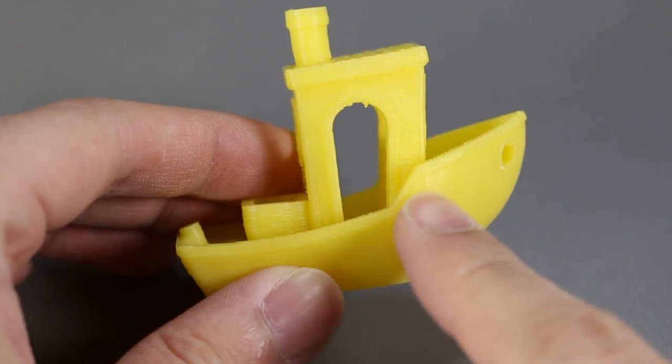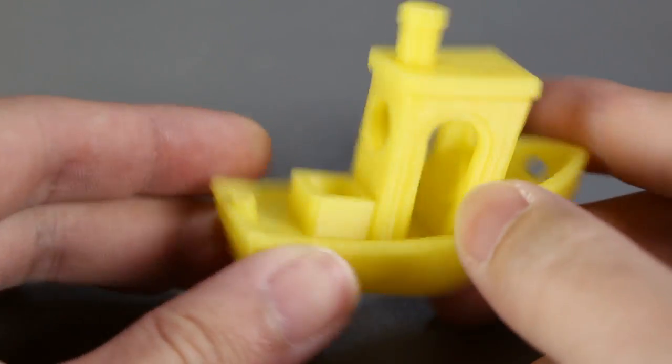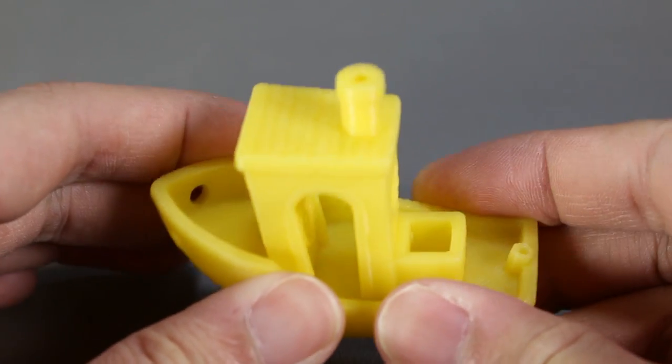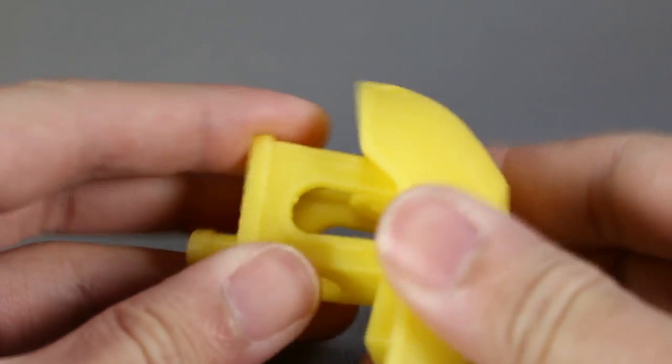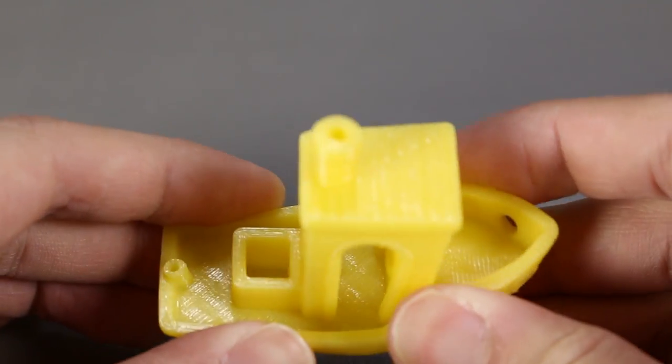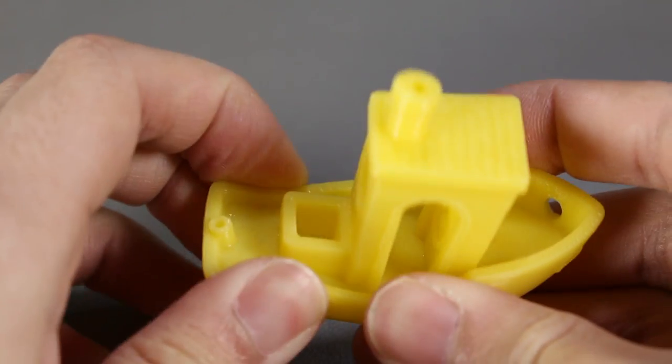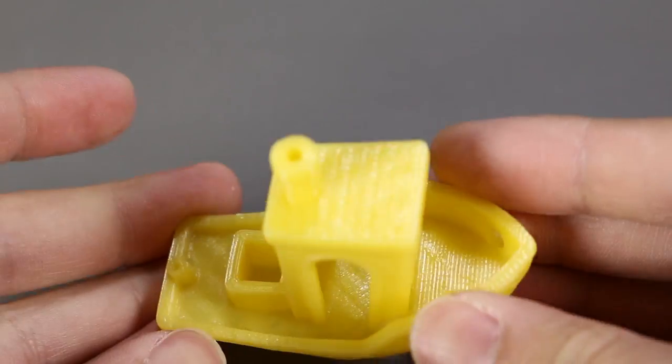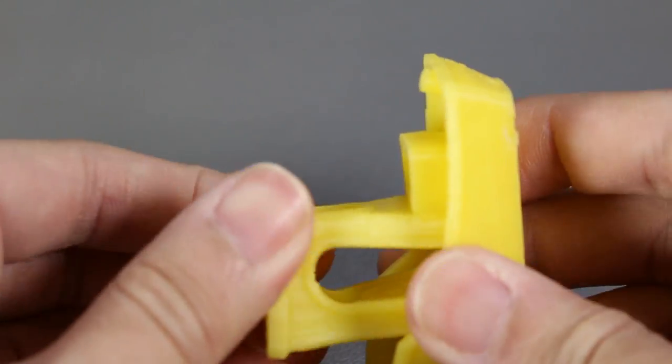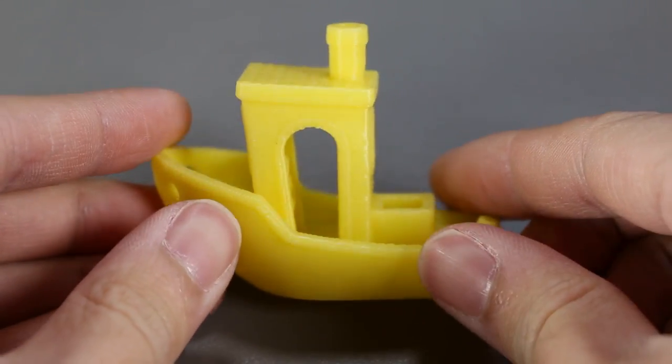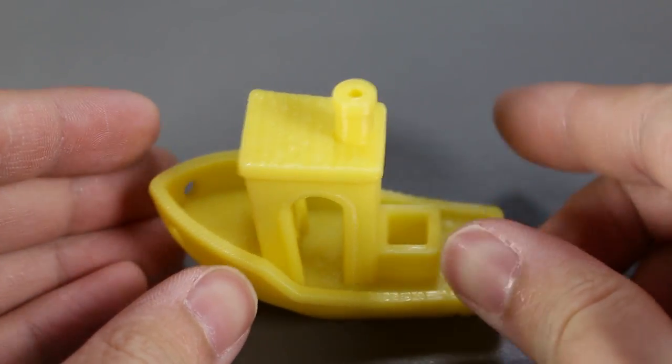It looks like the acetone didn't do anything at all. I can still see the lines on the surface. That being said, the print does feel a bit more rubbery now and softer. See I can push it in this way and twist the top like this. Other than that, nothing else happened. None of the smoothing of the surface.